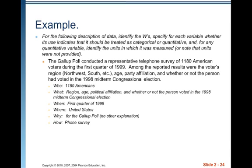When? The first quarter of 1999. Where? It says American, so that means the United States. Why? For the Gallup poll's purposes — no other explanation was given, but we know it was whatever the Gallup poll was interested in. And how? It was a telephone survey.